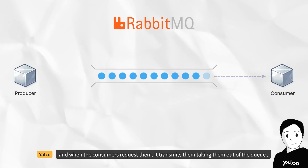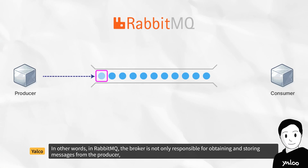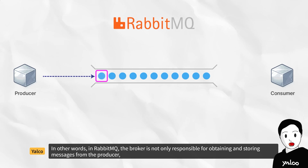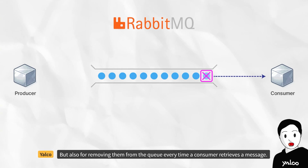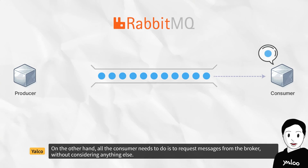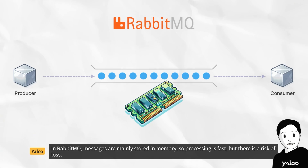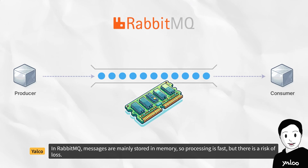When consumers request messages, the broker transmits them and takes them out of the queue. In other words, in RabbitMQ, the broker is not only responsible for obtaining and storing messages from the producer, but also for removing them from the queue every time a consumer retrieves a message. All the consumer needs to do is request messages from the broker without considering anything else. This approach is often described as smart broker, dumb consumer. In RabbitMQ, messages are mainly stored in memory, so processing is fast, but there is a risk of loss.